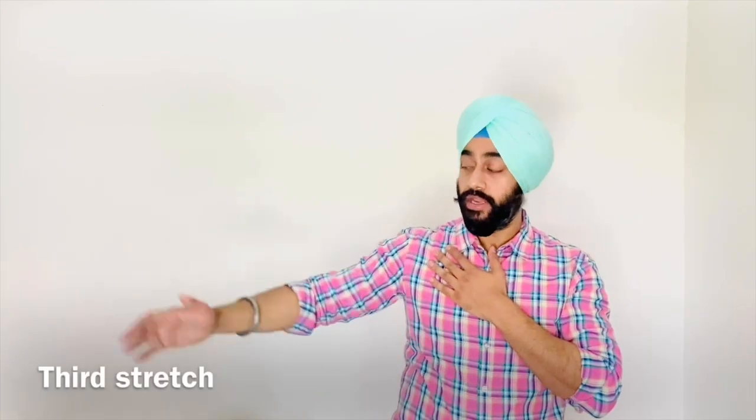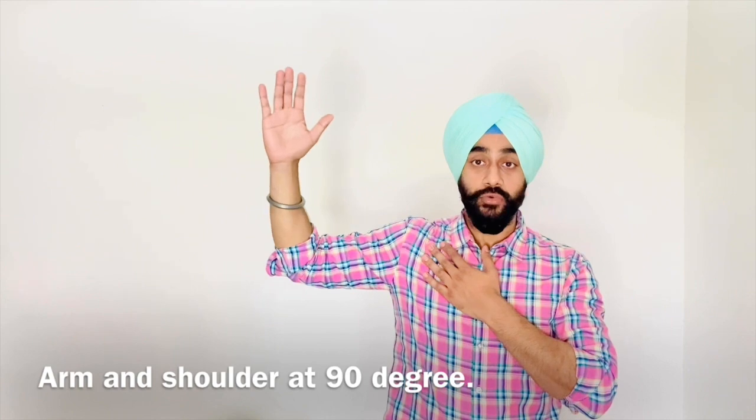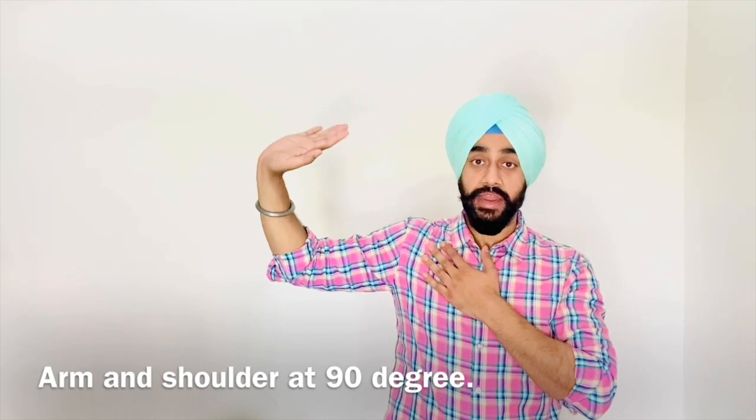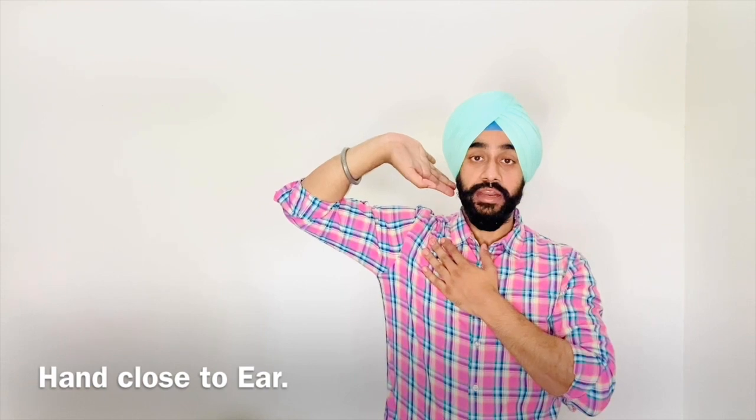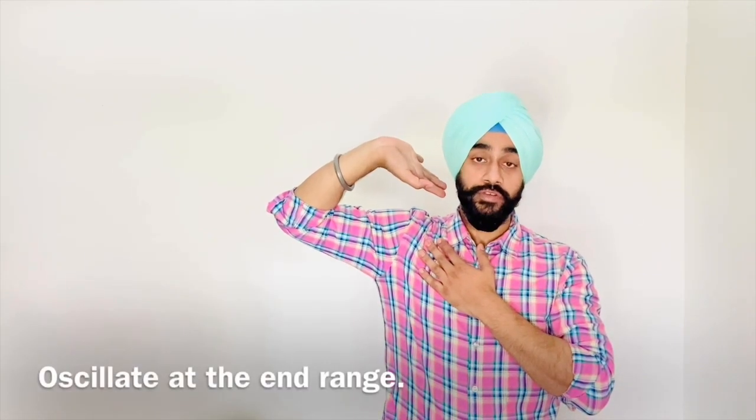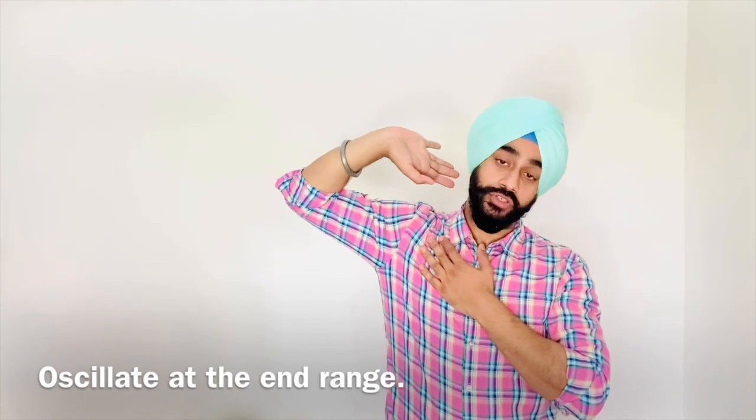In the third stretch, you again move your shoulder at this level. Now we will bend our elbow at 90 degrees. Hand will be in this position along with the ear and at the end, you have to oscillate. For more effective stretch, again you can side bend your neck or you can alter the position of shoulder.